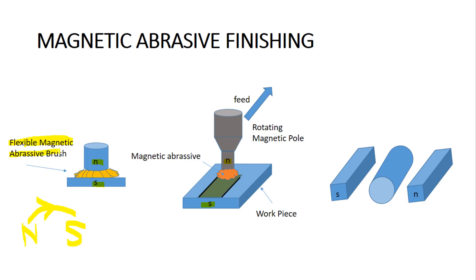The tool post starts rotating, and as it rotates, the magnetic abrasive brush also rotates. A feed is given and we can set the direction in which the tool moves. This magnetic brush performs the machining process, and it can similarly be used for machining cylindrical parts.